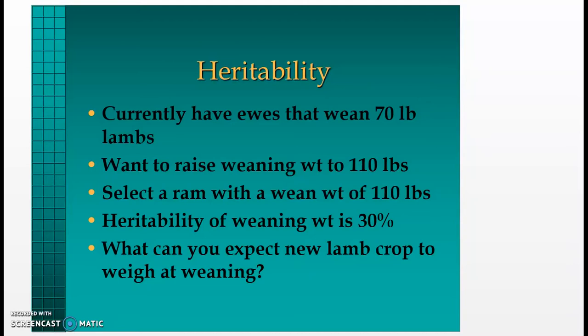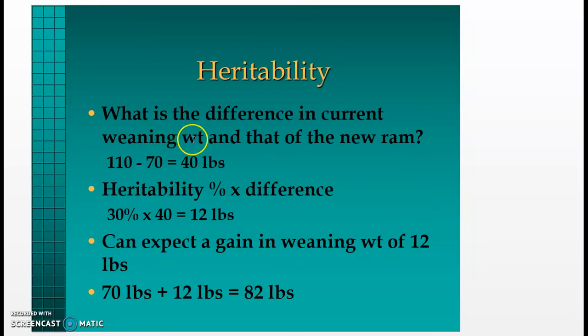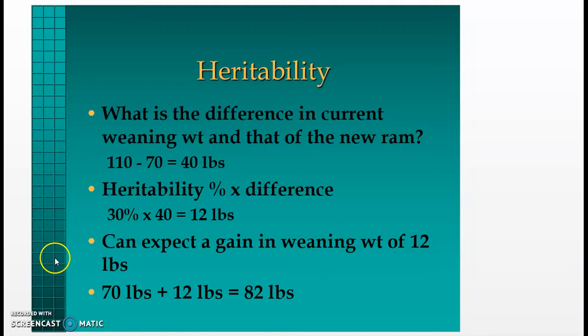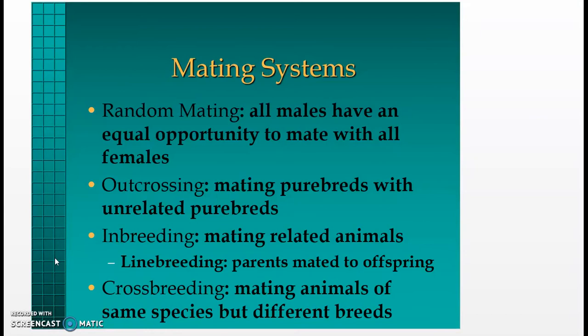Heritability calculation example: Currently weaning 70-pound lambs and want to raise weaning weight to 110 pounds. You select a ram with a weaning weight of 110 pounds. Heritability of weaning weight is 30%. The difference in current weaning weight and the new ram is 40 pounds (110 minus 70). Heritability percent times the difference: 30% × 40 = 12 pounds. You can expect a gain of 12 pounds, so 70 + 12 = 82 pounds expected weaning weight.